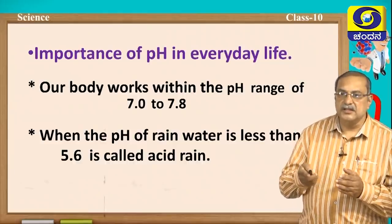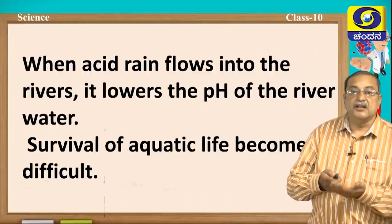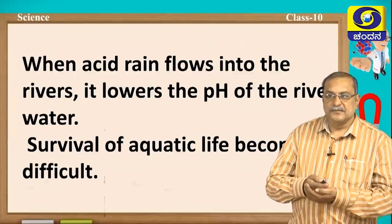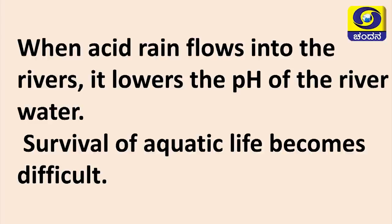Acid rain causes a lot of harm to the environment. When acid rain flows into rivers, the pH value of the river is reduced. Survival of aquatic life — fauna (animals) and flora (plants) — becomes very difficult. Even for other animals, drinking this acidic water is dangerous because it is more acidic in nature, and it causes several diseases.